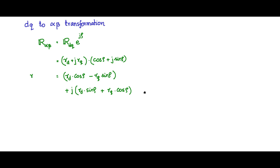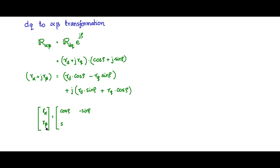The real part represents r_alpha and the imaginary part represents r_beta, so we can write r_alpha + j*r_beta. In matrix form, r_alpha and r_beta are given by the transformation matrix with entries [cos(rho), -sin(rho); sin(rho), cos(rho)] multiplied by the input vector [r_d, r_q]. So knowing r_d and r_q, we can get r_alpha and r_beta using this transformation matrix.